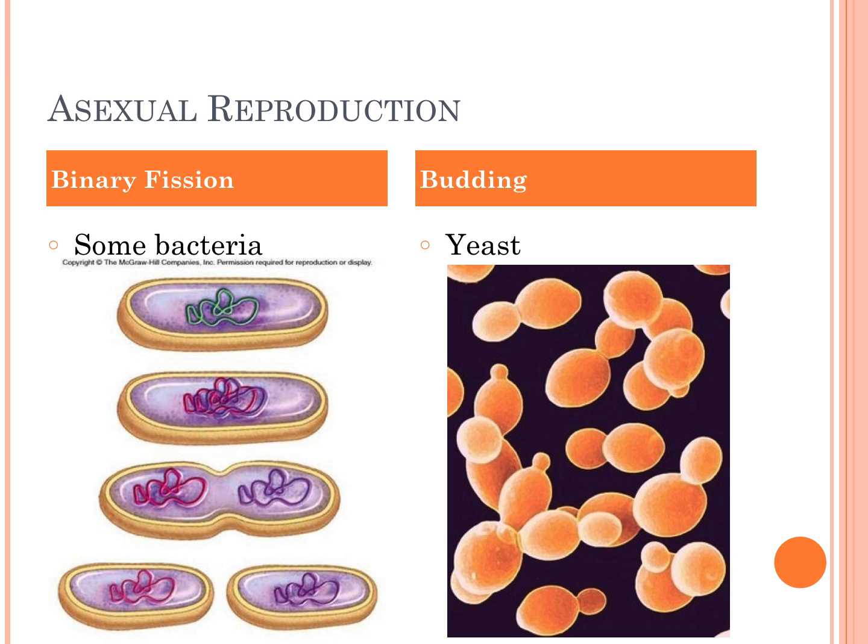Cellular reproduction can also be called asexual reproduction — reproduction by one parent. Some types of asexual reproduction include binary fission, used by some bacteria to reproduce, and budding. Yeast is one organism that reproduces by budding — a small bud or node forms on the parent organism, and eventually when that bud matures, it pinches off and forms an entirely new organism.